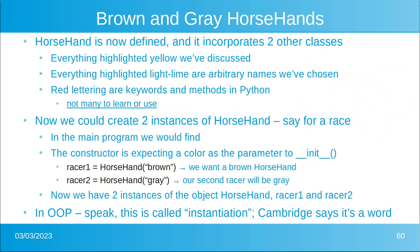So we have brown and gray horse hands now defined. Horse Hand is a class that incorporates two other classes. Everything highlighted previously is stuff we've discussed. The lime-colored highlights are arbitrary variable names we chose, and the red letters are keywords and methods used in Python. Python is great because there are very few of these special reserved words. We create two instances of Horse Hand for a race: racer_one equals HorseHand('brown') and racer_two equals HorseHand('gray').